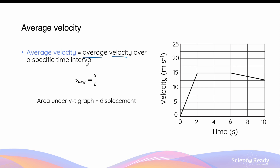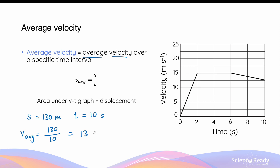Unlike instantaneous velocity, average velocity is the average over a specific time interval, calculated by dividing total displacement by total time. The total displacement was 130 meters and the total time was 10 seconds, as seen in the graph. Therefore, average velocity = 130 ÷ 10 = 13 meters per second.